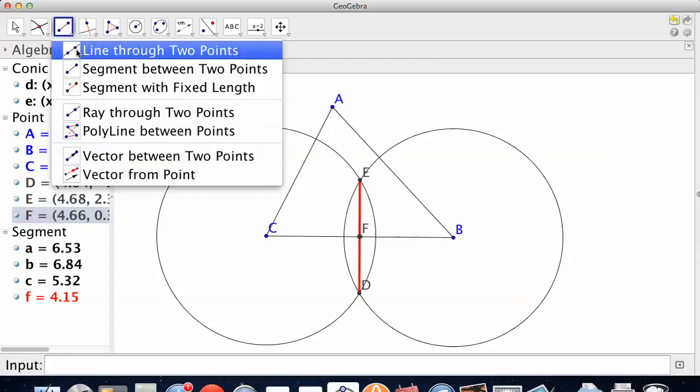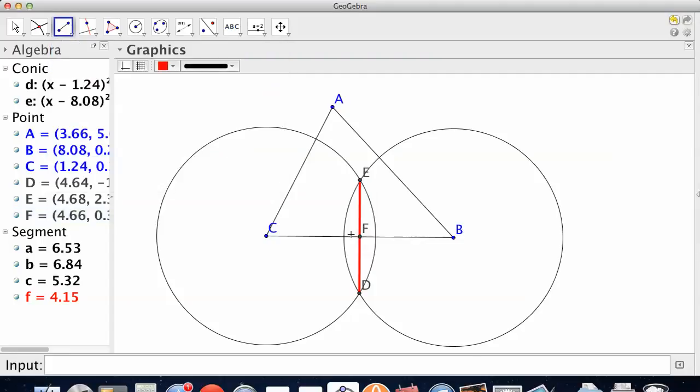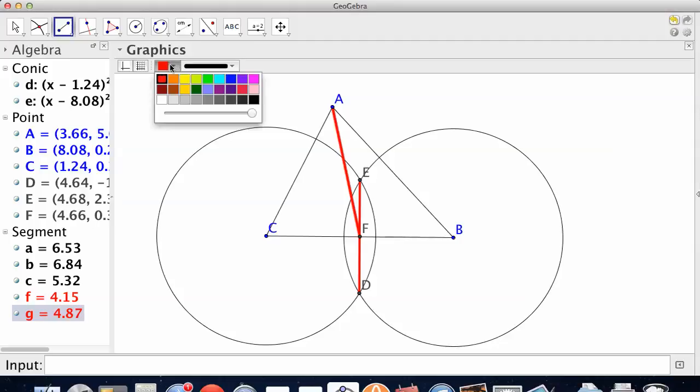So the median is from F to A. I don't want it to be red. I want it to be a different color. Blue. A to F is a median.